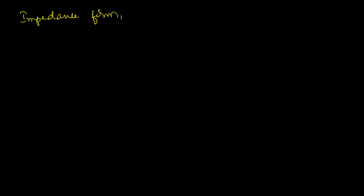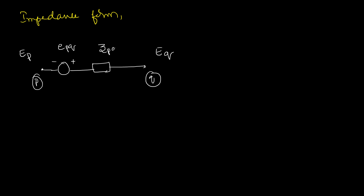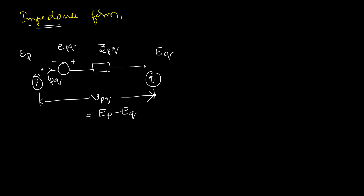Coming to the impedance form: let us consider two nodes — node P and node Q — whose voltages are EP and EQ. The impedance form consists of a voltage source EPQ in series with some impedance ZPQ. The voltage across nodes P and Q will be considered as VPQ, which equals EP minus EQ. The current passing through this element PQ will be considered as IPQ.